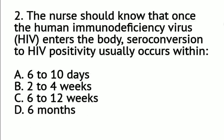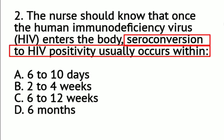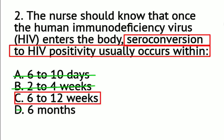Next, question number 2: The nurse should know that once the human immunodeficiency virus enters the body, seroconversion to HIV positivity usually occurs within: A. 6 to 10 days, B. 2 to 4 weeks, C. 6 to 12 weeks, or D. 6 months. Seroconversion is the period during which the body starts producing detectable levels of HIV antibodies. Production of HIV antibodies usually starts between 1 to 3 weeks after infection. During the seroconversion period, the patient will experience signs and symptoms such as severe flu-like symptoms including fever and body aches. Seroconversion to HIV positivity usually occurs within 6 to 12 weeks after the virus has entered the body. The correct answer is letter C.